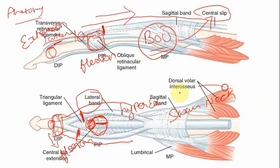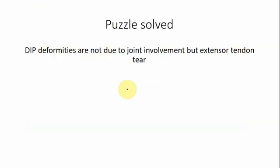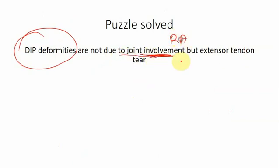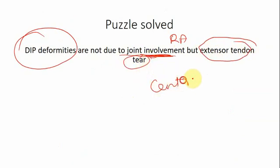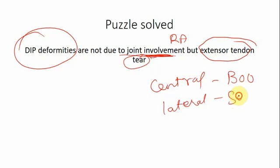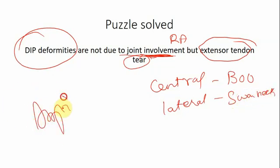So the puzzle is solved. The distal interphalangeal deformities in rheumatoid arthritis are not due to joint involvement — rather, they are because of extensor tendon tears. Whether the central tendon is torn or the lateral band is torn determines the deformity: if the central slip is torn, it is boutonniere; if the lateral band is torn, it is swan neck. This is Dr. Khadir for you from Chennai — catch you in my other videos, thank you.